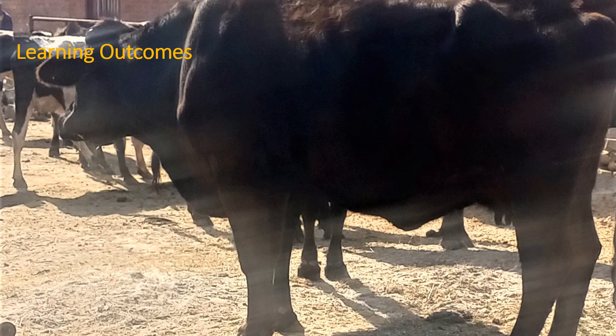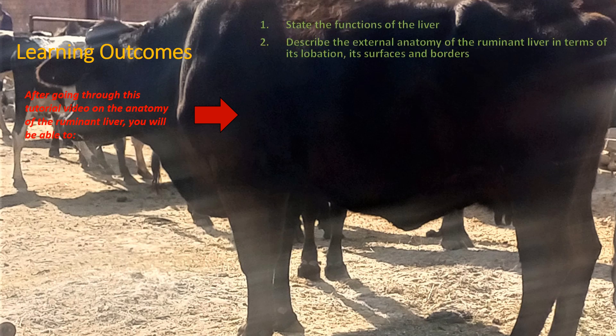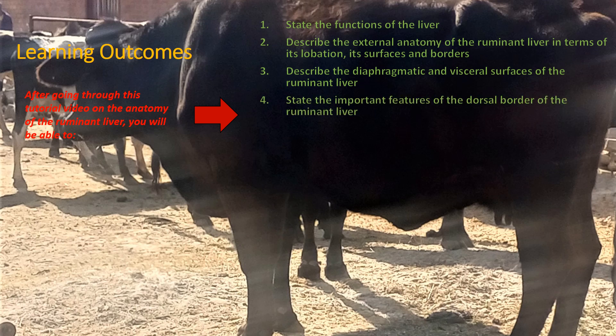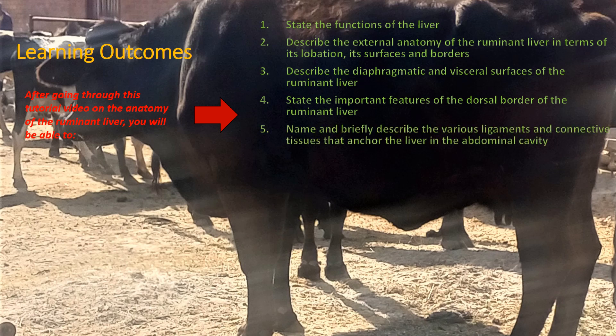Here is what you will learn after going through this tutorial video. You'll be able to state the functions of the liver and describe the external anatomy of the ruminant liver in terms of its lobes, surfaces and borders. You'll also be able to describe in detail the diaphragmatic and visceral surfaces, state the important features of the dorsal border, and name and briefly describe the various ligaments and connective tissues that anchor the liver in the abdominal cavity.